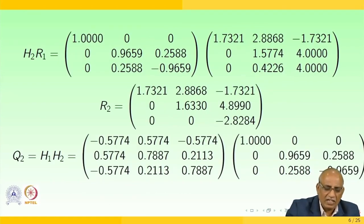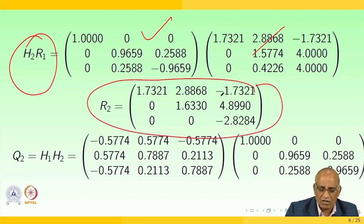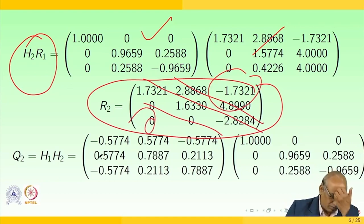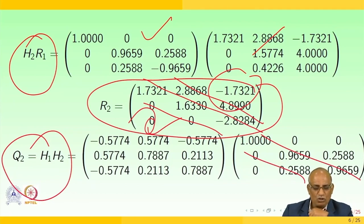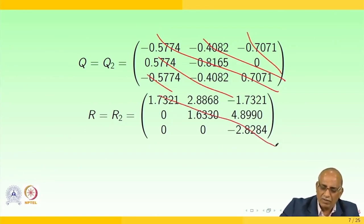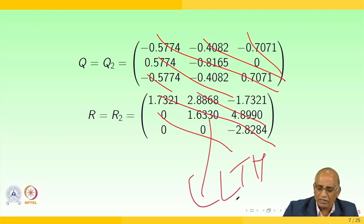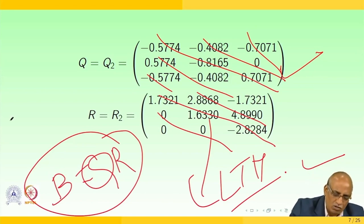Having known H1 and H2, I write H2·R1 — that is, H2 multiplied with R1 — to get matrix R2. Then Q2 = H1·H2. With this computation, Q = Q2, where R2 turns out to be a lower triangular matrix and Q turns out to be a non-zero matrix. So we are able to write B = Q·R, the product of two matrices, which we call QR factorization.